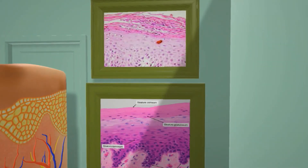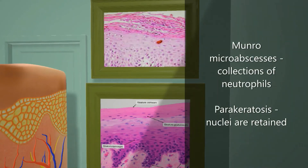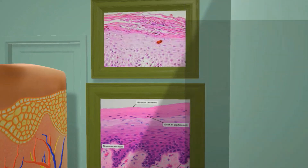In the top picture, we have the Munro microabscesses. Histologically, there are collections of neutrophils in the stratum corneum, known as microabscesses. In the bottom picture, we have a histologic view of parakeratosis, in which the nuclei are retained in the stratum corneum.